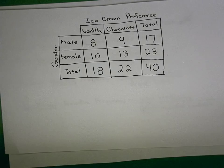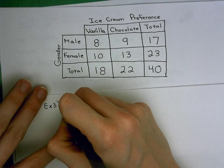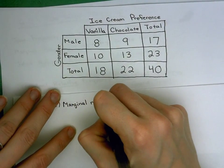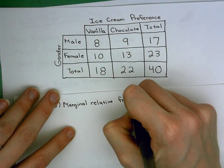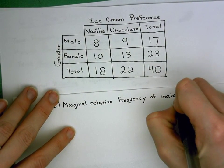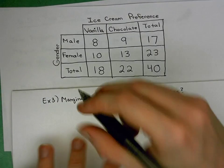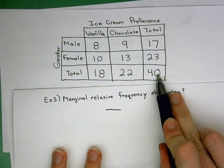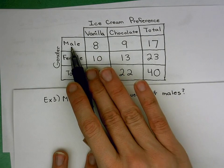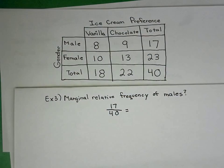Okay, let's look at a relative example. Example three: what is the marginal relative frequency of males? As soon as you see the word relative, you should be thinking we're doing a fraction. Marginal relative and joint relative are both divided by the grand total, which is 40. The marginal of males is 17, so we're going to do 17 divided by 40.